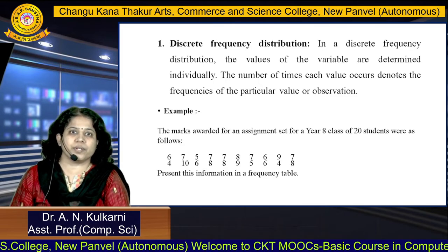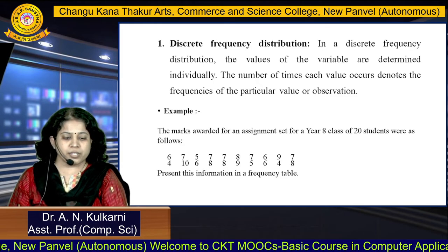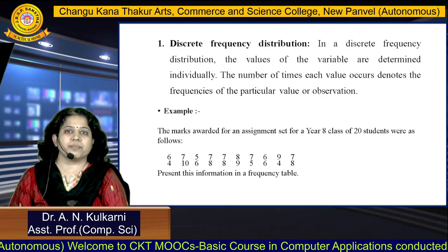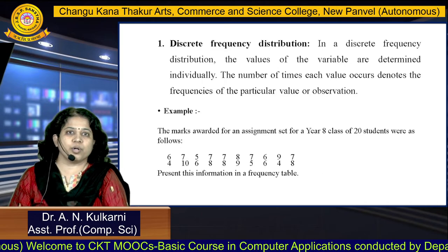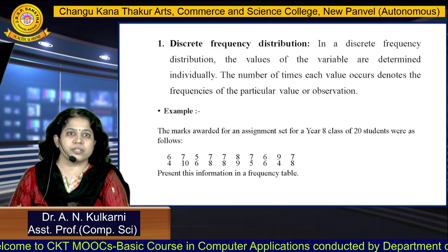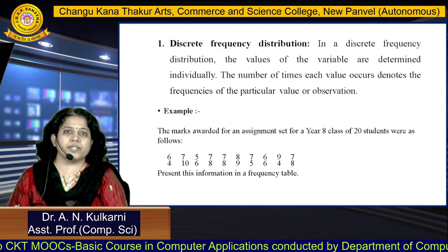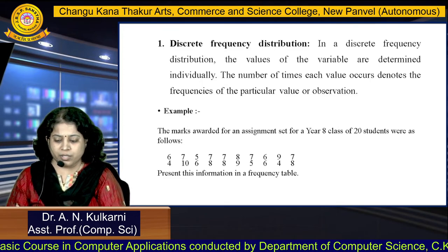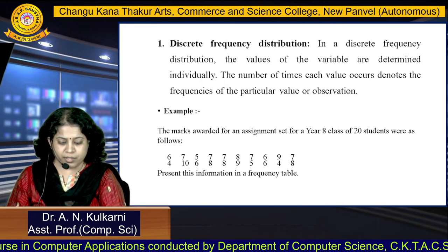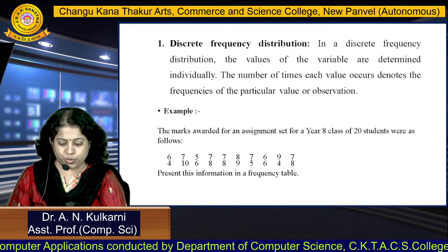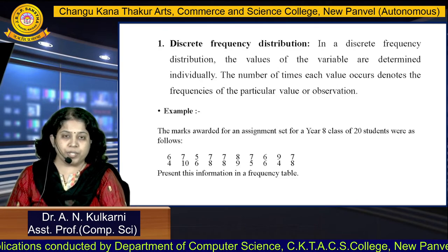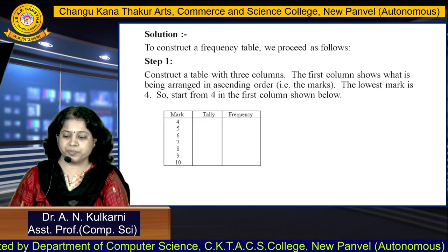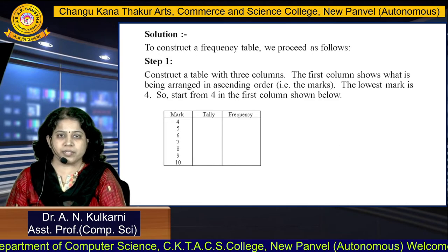In a discrete frequency distribution, the values of the variable are determined individually. The number of times each value occurs denotes the frequency of that particular value or observation. For example, marks scored by 20 students are given, and we have to present this information in a frequency table. To construct the frequency table, we proceed as follows.